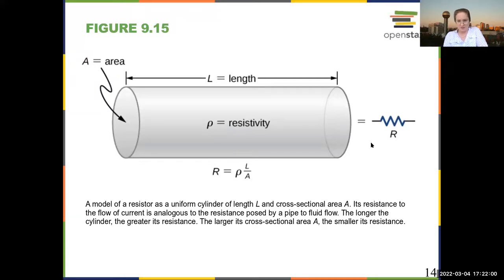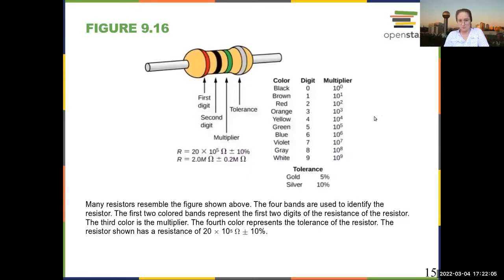That is denoted by this symbol when drawing circuit diagrams. Resistors also have standard color codes so that if the value isn't written on the component or you can't read it, you can determine the resistance from the color code. You're not expected to memorize this, but you are expected to know it exists and be able to look it up.